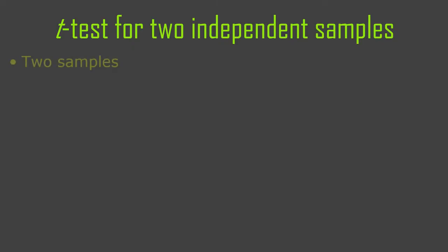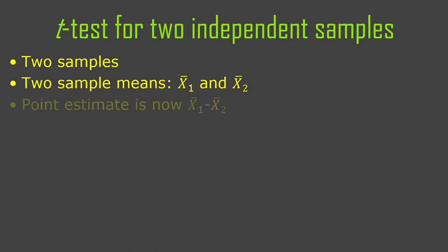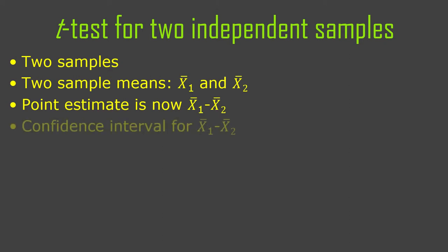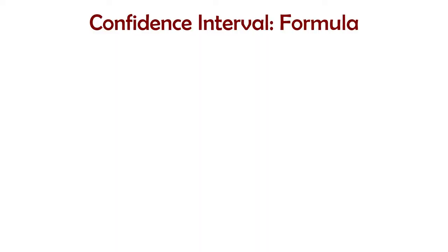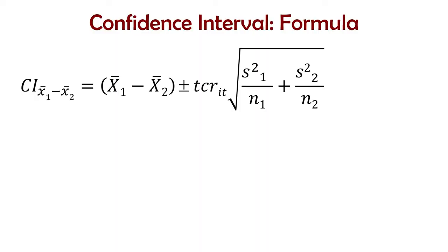Let's apply this to two independent sample means. Our statistic now is a difference — it's not a mean, it's a difference between two sample means. And so we're going to find the confidence interval for that difference. So the sampling distribution is the distribution of all possible differences.